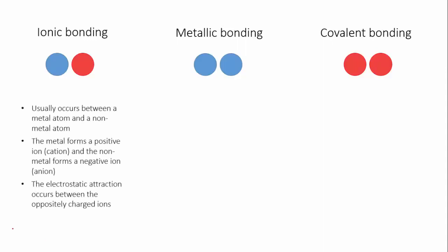Ionic bonding occurs between two ions of opposite charge. Usually, this is between a metal cation and a non-metal anion. The electrostatic attraction occurs between the oppositely charged ions.